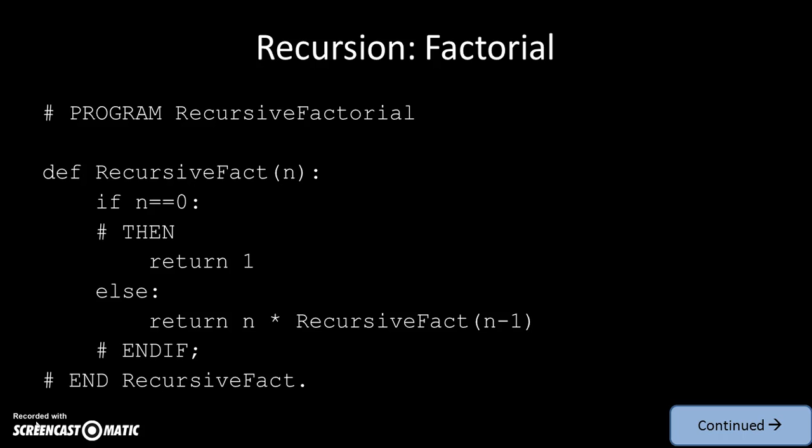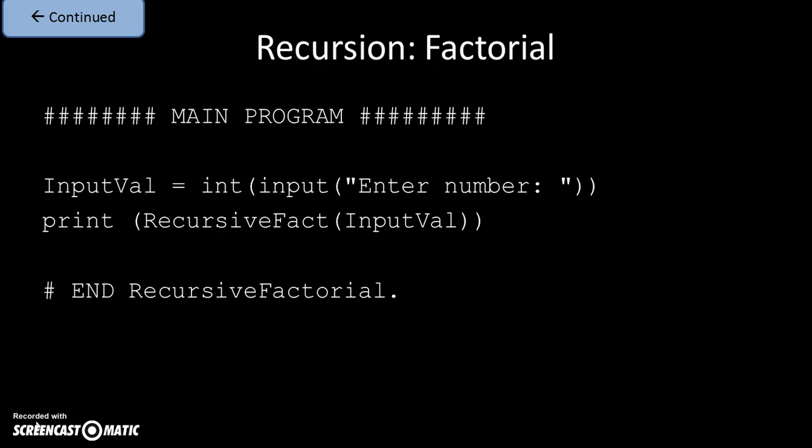If the number is 5, it'll compute 5 × recursive_fact(4), which works out recursively down to 1. The main program that calls that could be something like: get the number and then print recursive_fact of the value input.